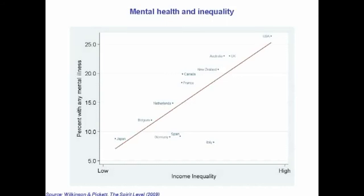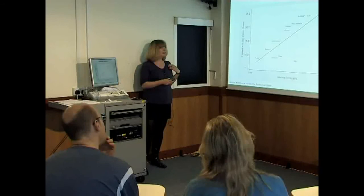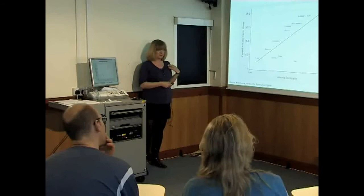Here's mental health. These data come from WHO surveys of mental health, trying to do the same thing in every country. Some countries have very low levels of mental health problems — these are adults who've had a mental health problem within the past 12 months. It's below 10% in Japan, Germany, and Spain. In the UK, 23% of us have been mentally ill within the past 12 months, and in the USA it's one in four. Those are huge three- to fourfold differences between countries at the bottom and countries at the top, and a strong relationship with inequality.